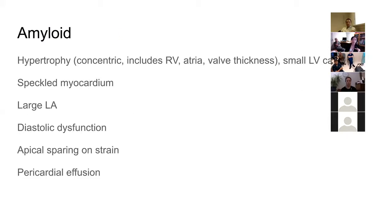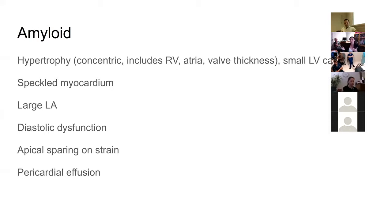The most common cause is cardiac amyloidosis, characterized by concentric hypertrophy involving the right ventricle and atria as well — the valve leaflets are thickened, everything is thickened. The LV cavity is small, classically described with a speckled myocardium and a large left atrium. It has a very typical strain pattern — the 'cherry on top' pattern — which is basically pathognomonic for cardiac amyloidosis and examiners love it.